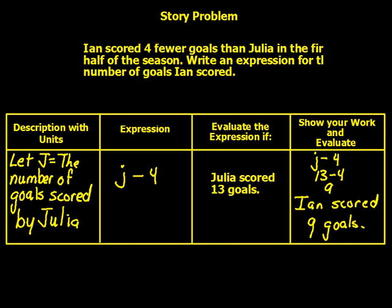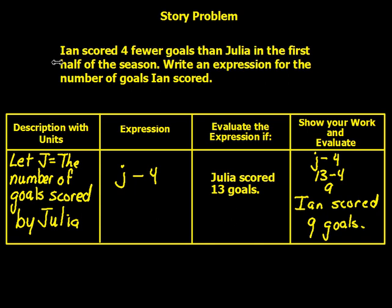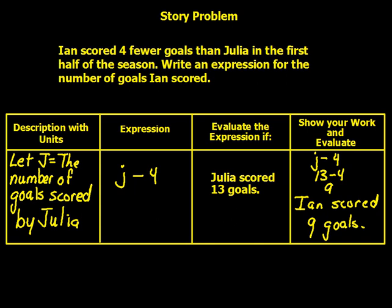Ian scored four fewer goals than Julia in the first half of the season. Write an expression for the number of goals Ian scored. Let J equal the number of goals Julia scored. We say J minus 4 because Ian scored four less. If Julia scored thirteen goals: J minus 4 equals thirteen minus 4 equals nine. Ian scored nine goals.